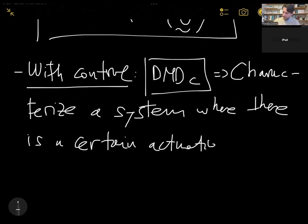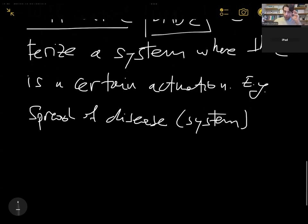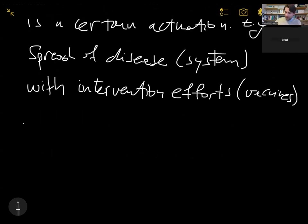So this way, what we're going to do is characterize a system where there is a certain actuation. And some examples of this could be a disease, a pandemic spread of disease, which is the original system, and I want to have intervention efforts. These intervention efforts could be, for example, the vaccines. So how can I get the unforced dynamics, the dynamics without those interventions? Because that's what will really allow me to determine what happens with the original system.